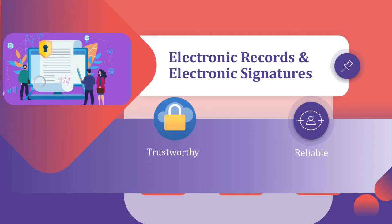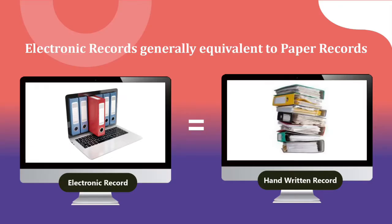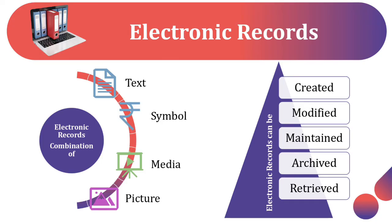Electronic Records and Electronic Signatures are trustworthy and reliable. The FDA clearly stated that electronic records are generally equivalent to paper records. As you can see in the picture, the electronic record and handwritten record are equivalent. Electronic Records are a combination of text, symbols, audio, video, and pictures — they are trustworthy records.